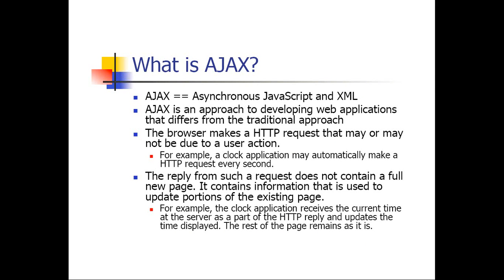Ajax is Asynchronous JavaScript and XML, so it's a combination of Java and XML. Ajax is an approach to developing web applications, and it differs from a traditional approach. The browser makes an actual HTTP request that may or may not be due to a user action. A clock application, for example, may automatically make an HTTP request every second — obviously it's updating the time automatically.